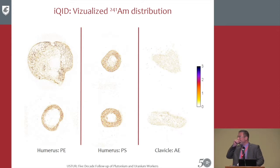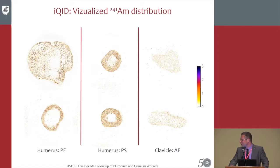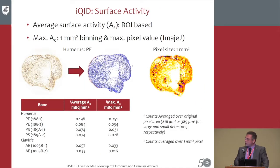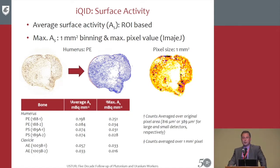These are the results. Some bones show up really well on screen, but the sample on the right — counted for only 300 hours — is harder to see, though counts are there. You have humerus proximal end, humerus proximal shaft, and clavicle acromial end on the far right. You can see a really nice distribution in the top left corner within the trabecular bone regions, especially when the autoradiography image is overlapped with the actual slide image.